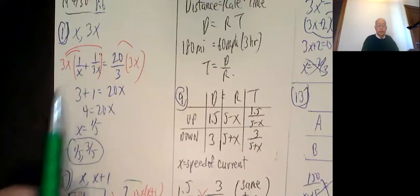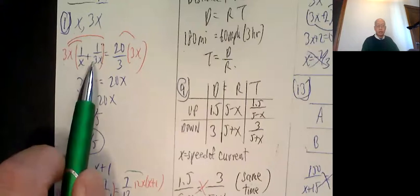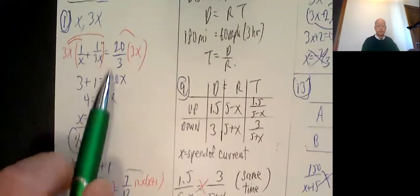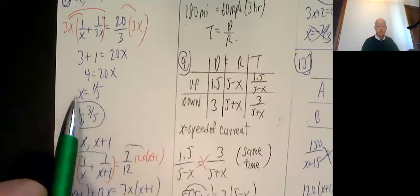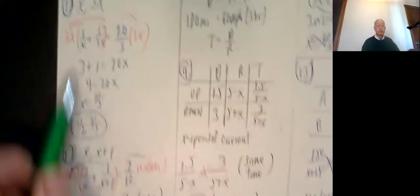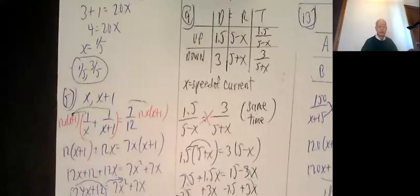Multiply both sides by 3x. 3x times x is 3, 3x times 1 over 3x is 1, the answer to 320x, 4 equals 20x, x is equal to 1 fifth. So the smaller number is 1 fifth, 3 times that is 3 fifths, so the numbers are 1 fifth and 3 fifths.